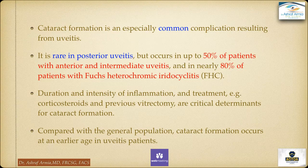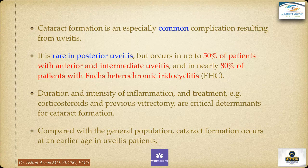Cataract formation is an especially common complication resulting from uveitis. It's rare in posterior uveitis but occurs in about 50% of patients with anterior and intermediate uveitis, and in nearly 80% of patients with Fuchs heterochromic iridocyclitis. The duration and intensity of inflammation and treatment — for example corticosteroids, previous vitrectomy — are critical determinants for cataract formation. Compared with the general population, cataract formation occurs at an earlier age in uveitis patients.